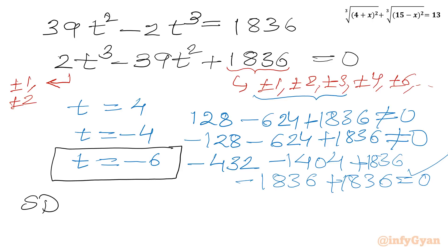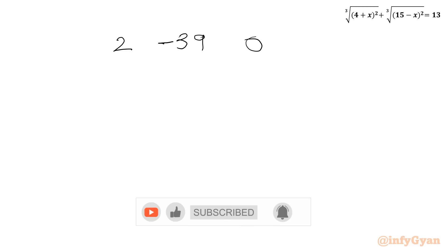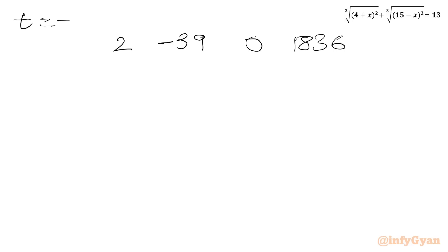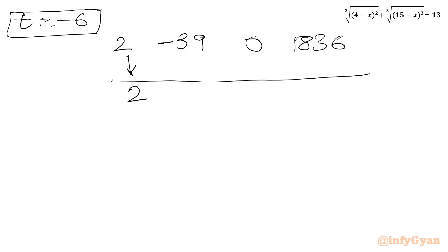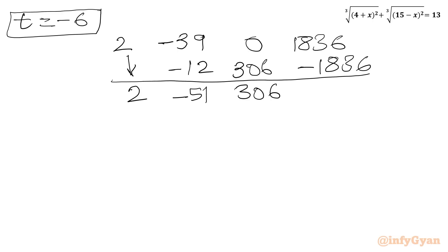Using synthetic division with base solution t = −6 and coefficients 2, −39, 0, 1836: bring down 2; −6 × 2 = −12, giving −51; −6 × (−51) = 306; −6 × 306 = −1836, remainder 0. The resulting quadratic coefficients are 2, −51, 306.